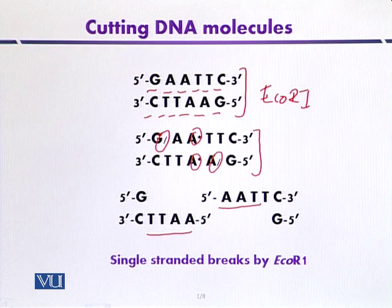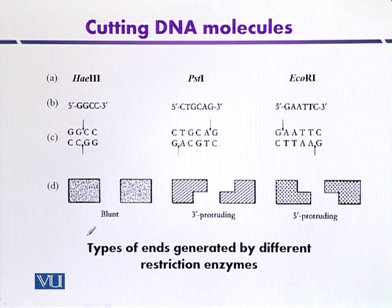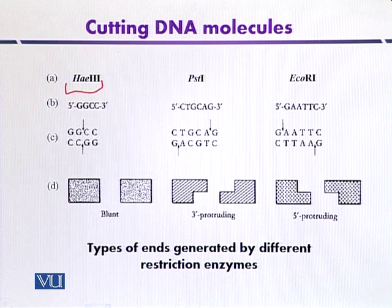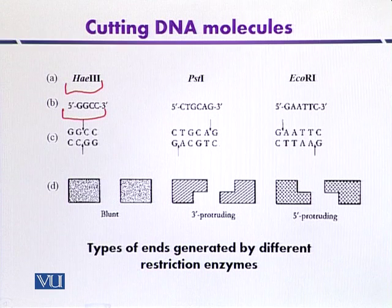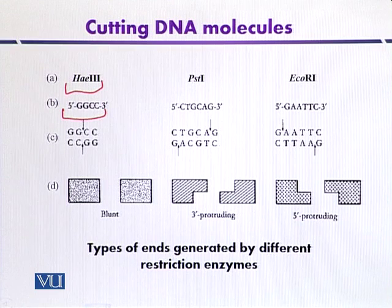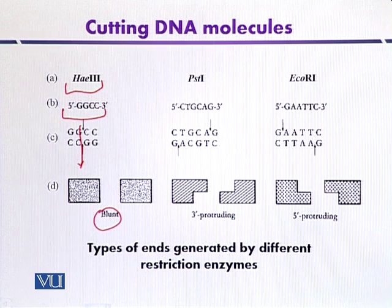The EcoR1 recognition sequence is composed of 6 base pairs. There is another example of a different enzyme that cuts a different recognition sequence — HaeIII. It can recognize a DNA sequence composed of 4 base pairs. A recognition sequence, for convenience, can be represented by a single strand written 5' to 3'. HaeIII recognizes GGCC. When it cuts the DNA at that recognition site, it produces blunt ends — meaning there are no single-stranded protruding overhangs.